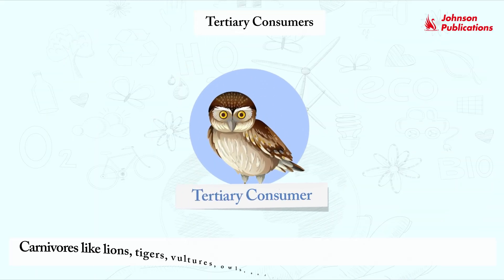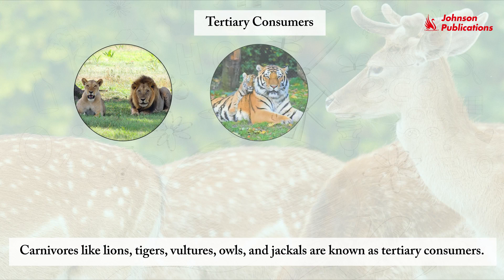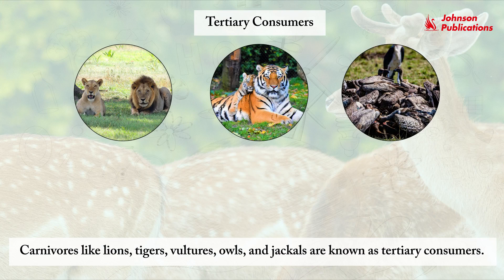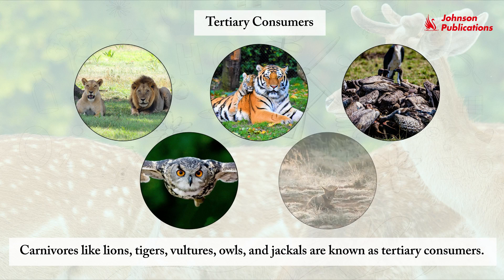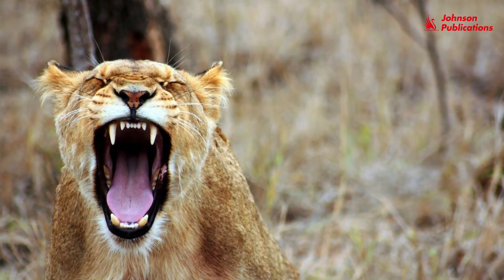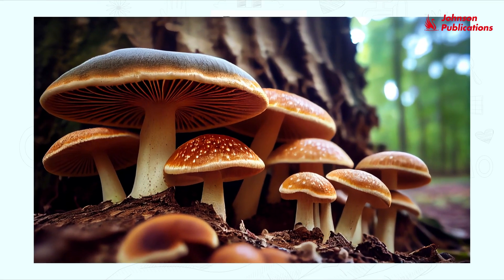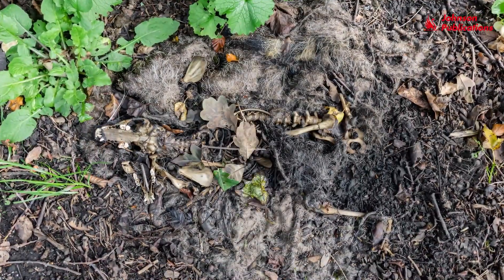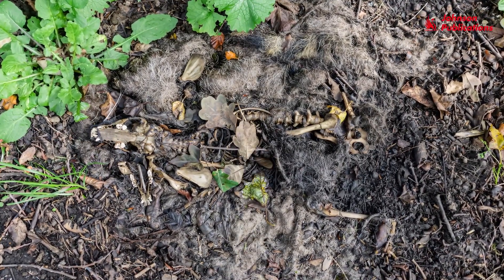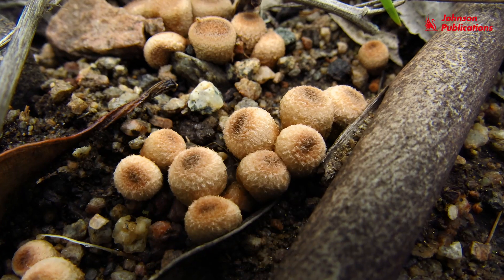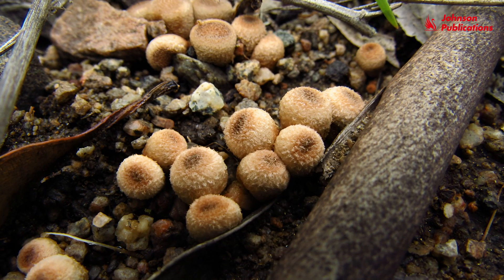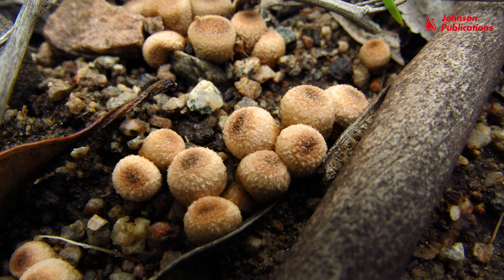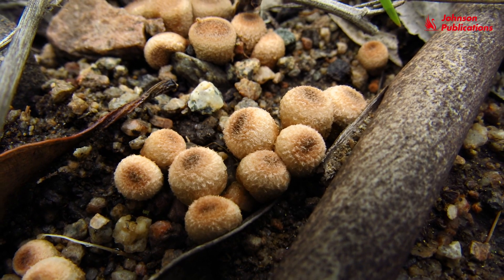Tertiary consumers: carnivores like lions, tigers, vultures, owls and jackals are known as tertiary consumers. They eat other animals. Decomposers: after dying, animal remains get decomposed. Decomposers like fungi and bacteria help break down dead plants and animals, returning their nutrients to the soil for recycling.